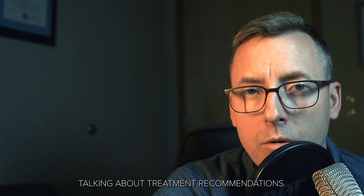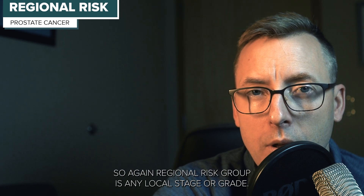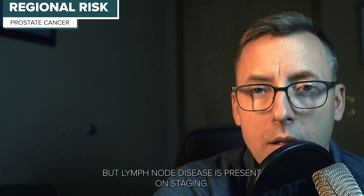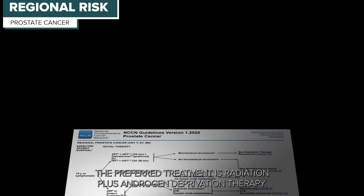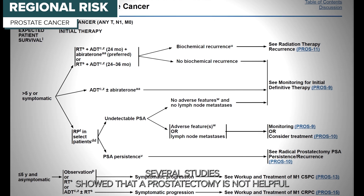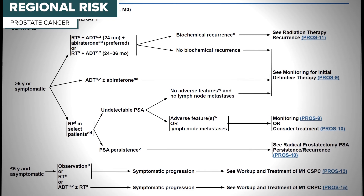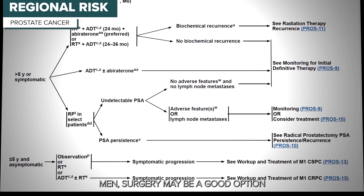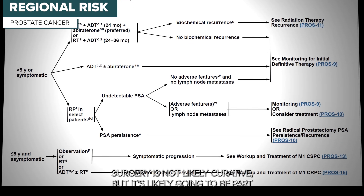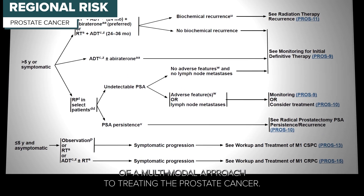For the regional risk group of prostate cancer — any local stage or grade but with lymph node disease present on staging — treatment recommendations change slightly. The preferred treatment is radiation plus androgen deprivation therapy. Several studies showed that a prostatectomy is not helpful if there's a high volume of node disease. However, for patients with an isolated lymph node or for younger men, surgery may be a good option, likely as part of a multimodal approach rather than as a curative treatment.